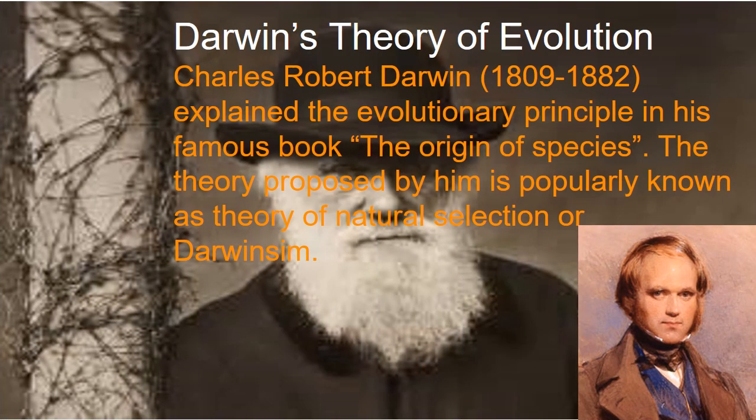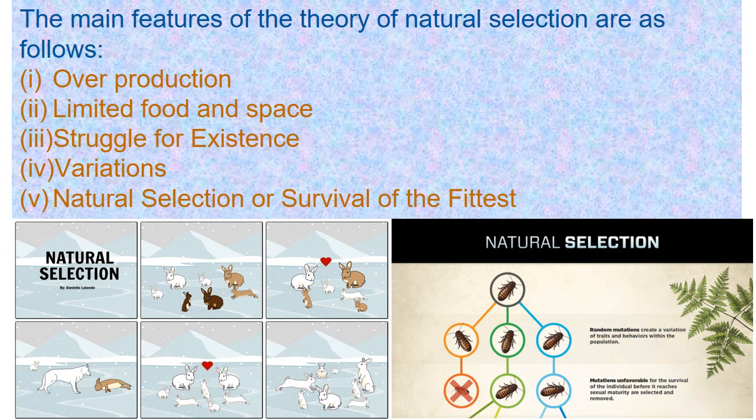Darwin's theory of evolution: Charles Robert Darwin (1809–1882) explained the evolutionary principle in his famous book The Origin of Species. The theory proposed by him is popularly known as the theory of natural selection or Darwin's theory. The main features are: over-production, limited food and space, struggle for existence, variations, and natural selection.